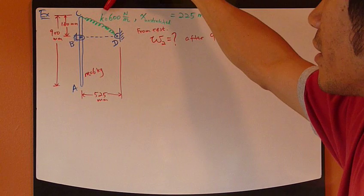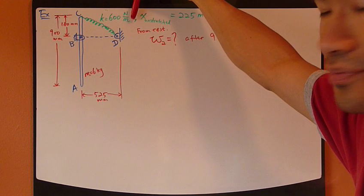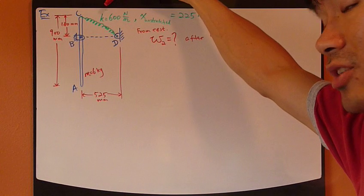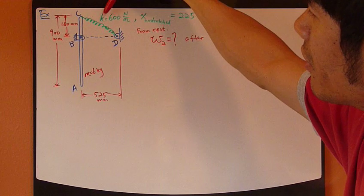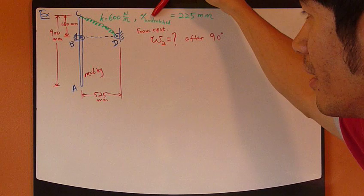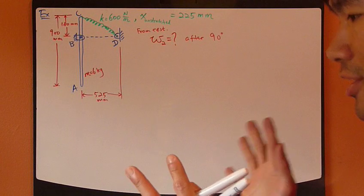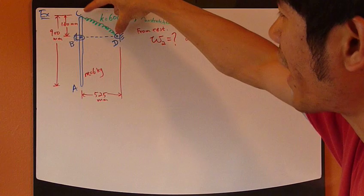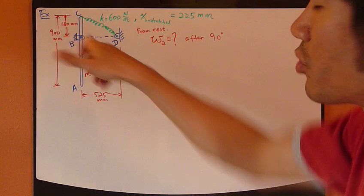How do we decide which way it's going to go? Look at the given information. The spring constant K is 600 units per meter — don't confuse this K with the radius of gyration K, as they apply to totally different things. The unstretched length of the spring is given as 225 millimeters. So we need to find how long the spring is right now at this instant.